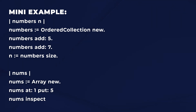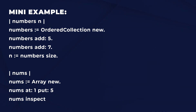Let's look at a mini example. OrderedCollection is a class — a type of data structure, a collection of objects. So 'numbers := OrderedCollection new' is a unary message. Then 'numbers add: 5' is a keyword message, period, then 'numbers add: 7'. Then 'n := numbers size', so n will be 2. Also: 'nums := Array new', 'nums at: 1 put: 5', then inspect it — you'll see at position 1 in the array it has 5. Between the vertical bars is how you define temporary variables — numbers and n are both lowercase temporary variables, and nums here is also a temporary variable.